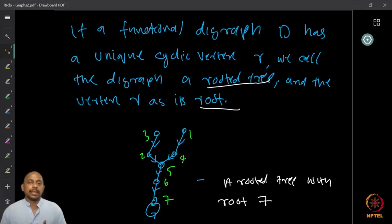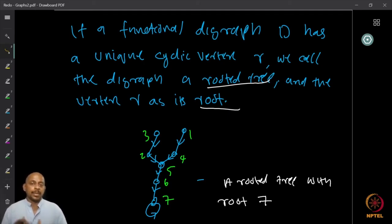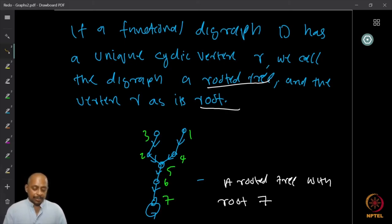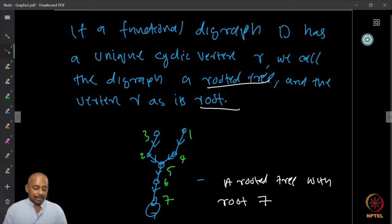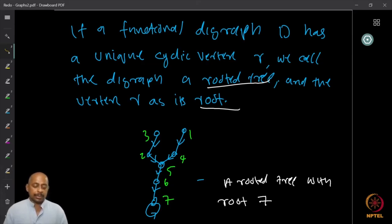If a functional digraph has exactly one cyclic vertex in the entire graph, we call it a rooted tree. The root is the vertex that has a loop — the single cyclic vertex. In an example, vertex 7 is the root of the functional digraph because it is the single cyclic vertex in a loop, and every other vertex has exactly one outgoing edge, forming a rooted tree.